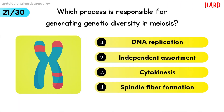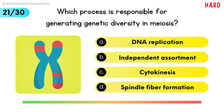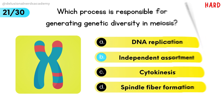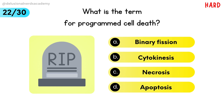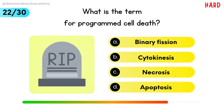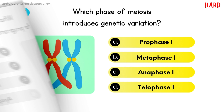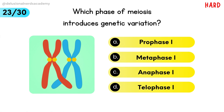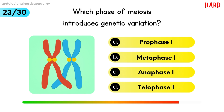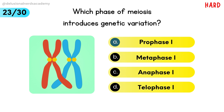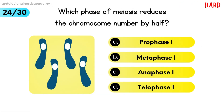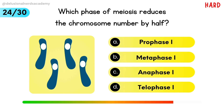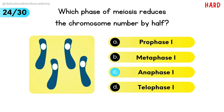Which process is responsible for generating genetic diversity in meiosis? Independent assortment is the answer. What is the term for programmed cell death? Apoptosis is the correct option. Which phase of meiosis introduces genetic variation? Prophase 1 is the answer. Which phase of meiosis reduces the chromosome number by half? Anaphase 1 is the answer.